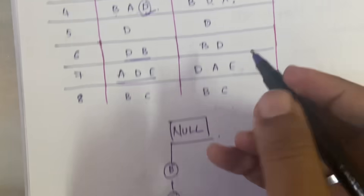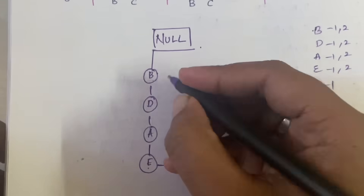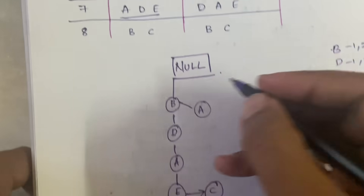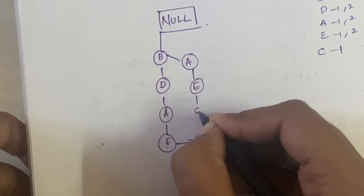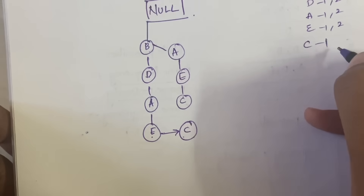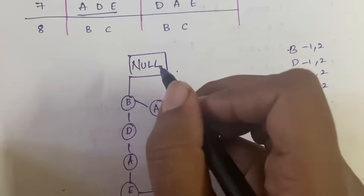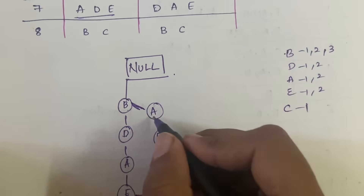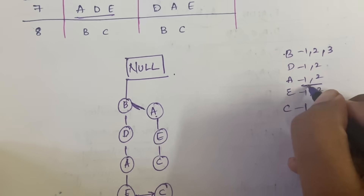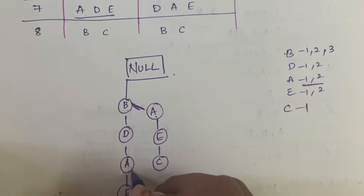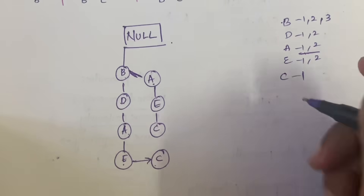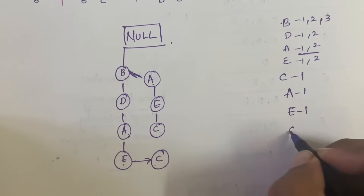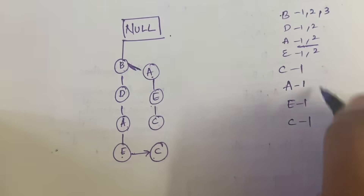Next is the transaction B, A, E, C. For B we had attached D next, but here we have A directly — so we create a new node A branching off B, and attach E and then C to it. For B it becomes comma 3. This new A, E, C branch starts fresh — A is equal to 1, E is equal to 1, C is equal to 1.